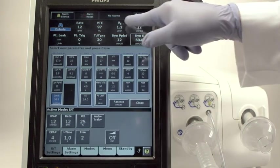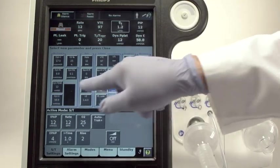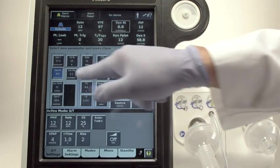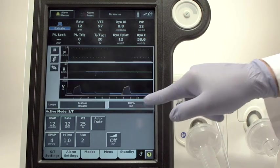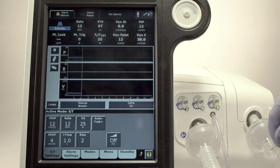You can change multiple display fields once the full menu is open. Simply touch the next field you wish to change and touch the new parameter in the menu window. When you are finished, touch Close and you are back to displaying your selected nine parameters.